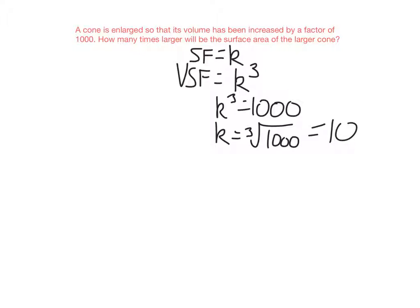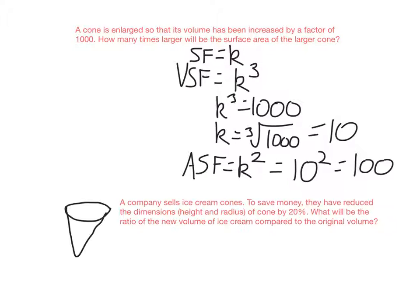So k is 10. Now, I want to find the area scale factor, or the surface area scale factor. So that will just be k squared. In this case, it's 10 squared, which is 100. So that means if the cone's enlarged so that its volume's been multiplied by 1,000, its surface area will be 100 times that of the original cone.